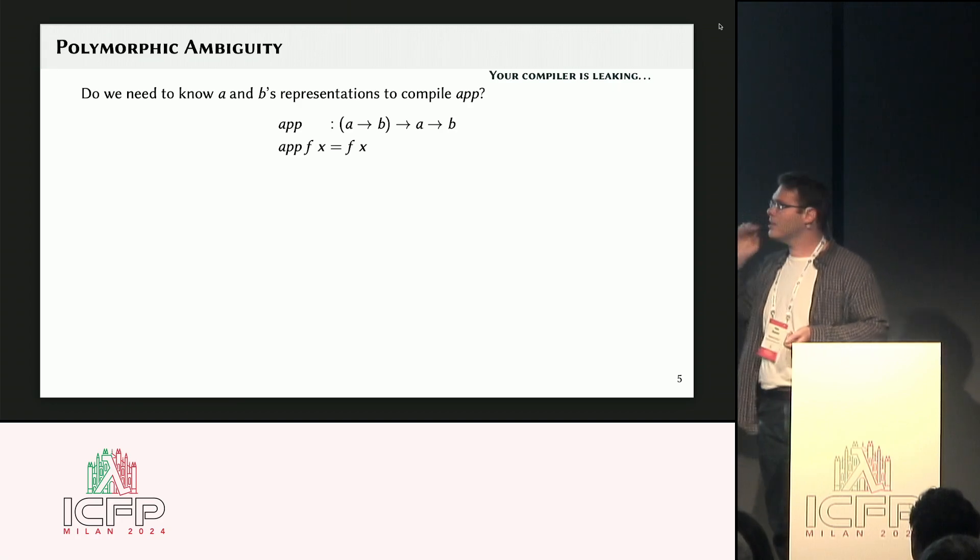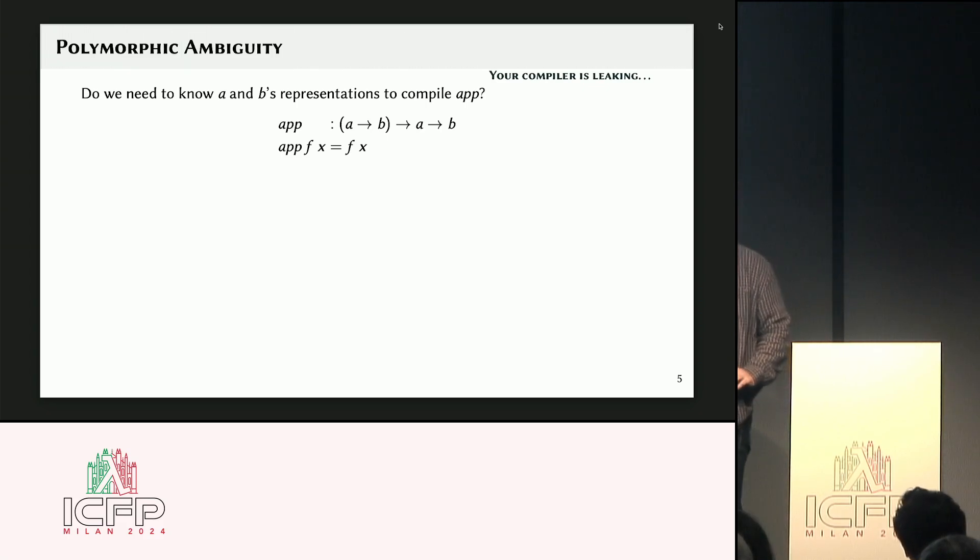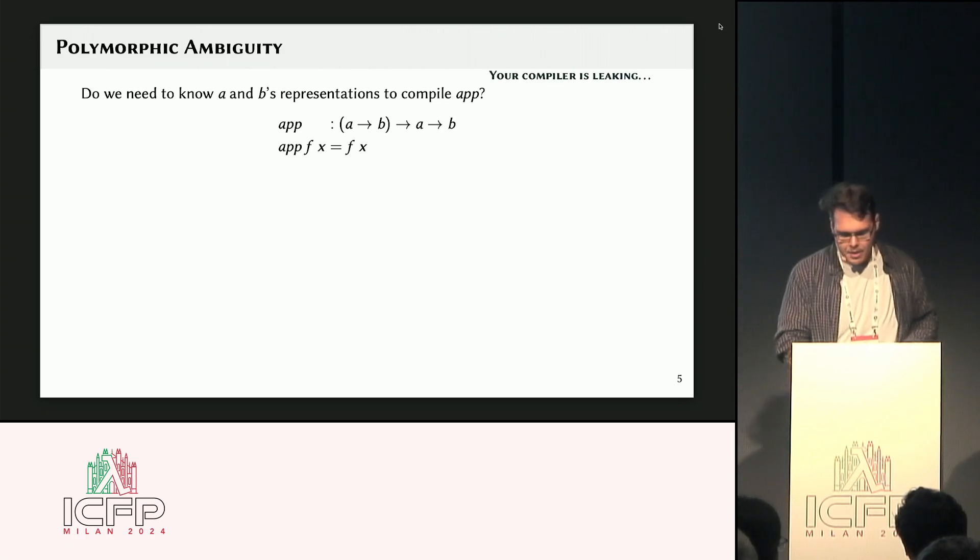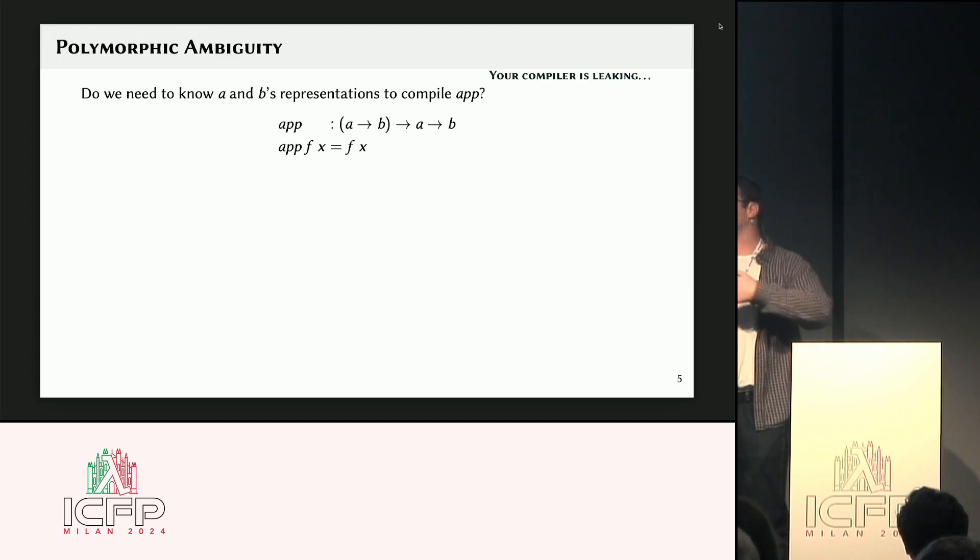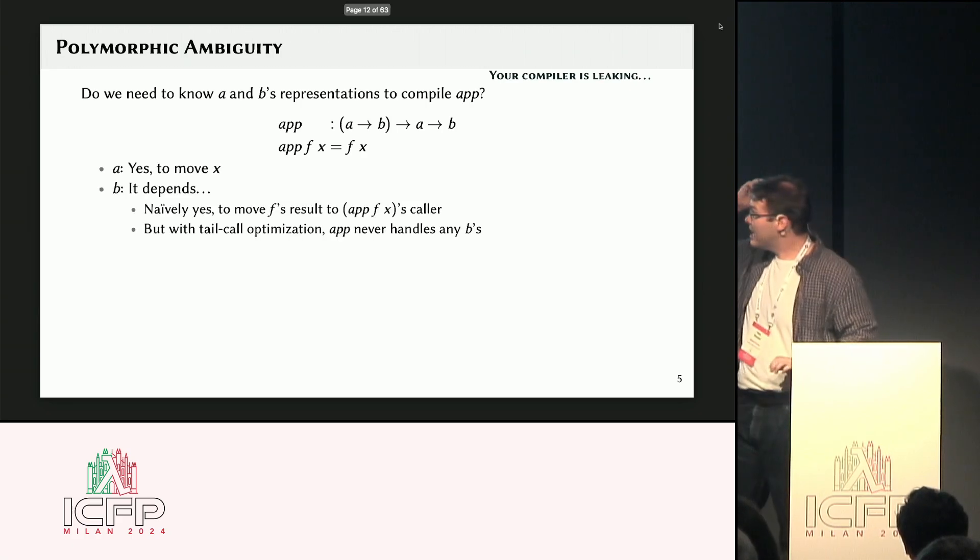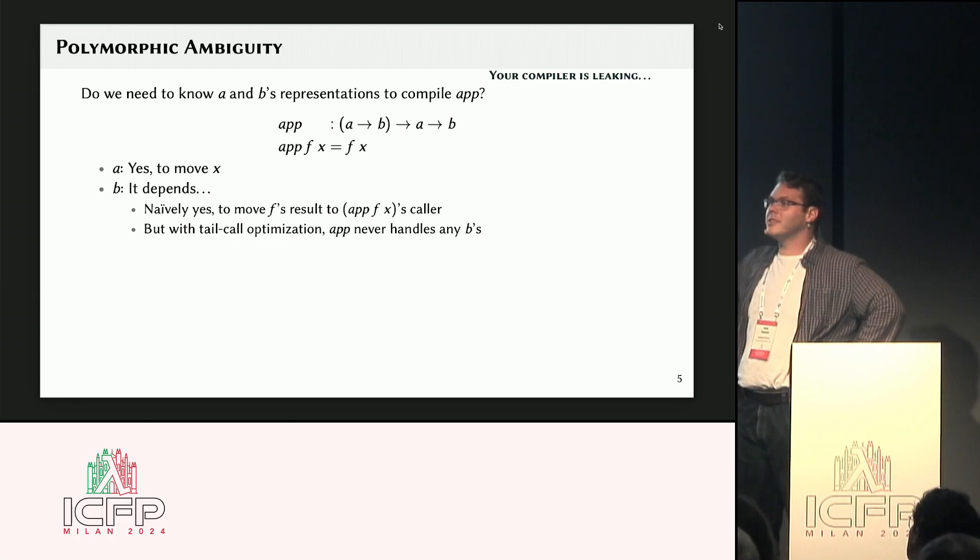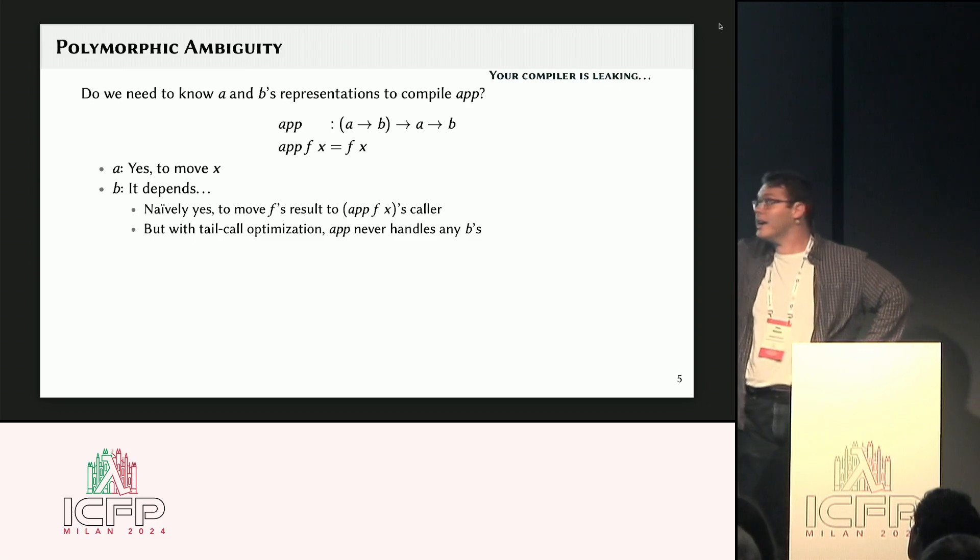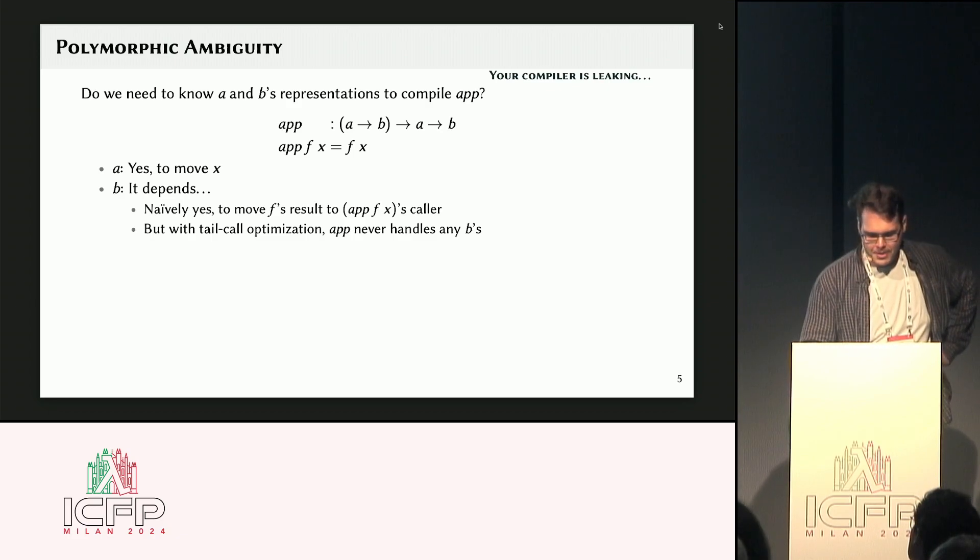Okay? And things can start to get a little funnier and more interesting examples, like even in the simple application function. So what do I need to know to compile this? Well, certainly I need to know what the X looks like, so what is the representation of A, because I'm moving the X around, but, you know, what about B? You might think, well, after I call F, it's going to return a B to me, so I need to know where it is to pass it to my caller. That makes sense. But if I know I'm going to do tail call optimization in my compiler, then actually app doesn't touch the result at all. So actually the representation of B can be irrelevant, as long as I know a little bit of something about my compiler.